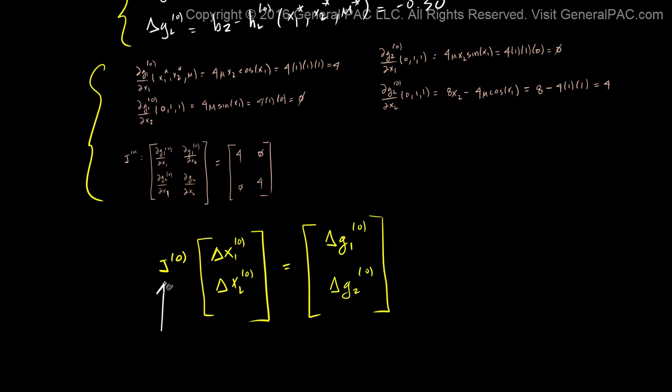We have the Jacobian matrix and we have the Jacobian matrix for the 0th iteration, which is just plugging in our initial values. And we also have these terms right here.